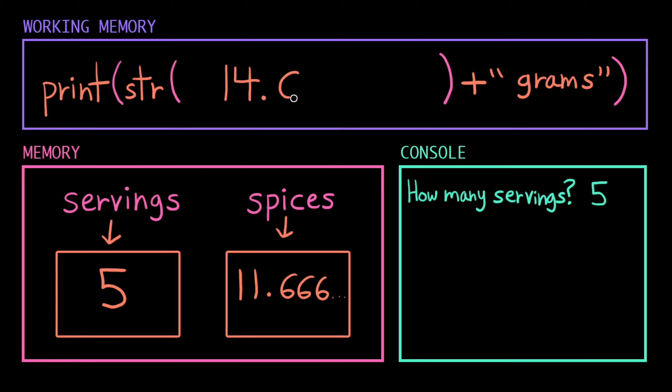Now we're in the next innermost parentheses. We already have a single value, so we pop outside those parentheses and we see the string function. The string function casts this to a string and returns out that value. Now we're in the last set of parentheses. We're concatenating two strings, so we just smoosh them together.